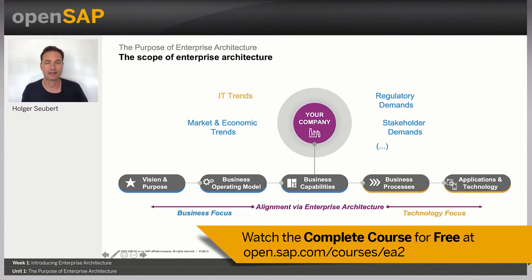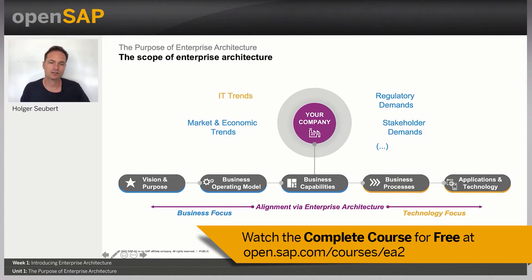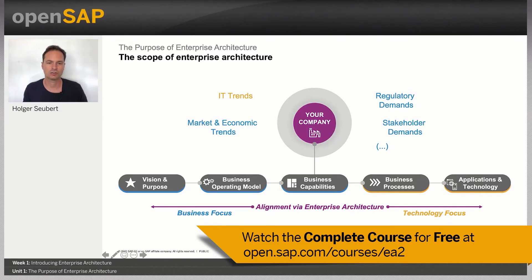How does enterprise architecture fit into this picture? It is exactly the practice of enterprise architecture that tries to align the different building blocks of your organization. One of the very core concepts of enterprise architecture is to look holistically at your company by combining the business side with the technology side.